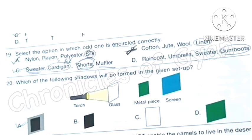Question 19: Select the option in which odd one is encircled correctly. Let's start with option A: Nylon, rayon, polyester, silk. So silk is encircled here and nylon, rayon, polyester are artificial fiber and silk is a natural animal fiber that we obtained from silk moth. So option A is the correct answer as the odd one is encircled correctly.